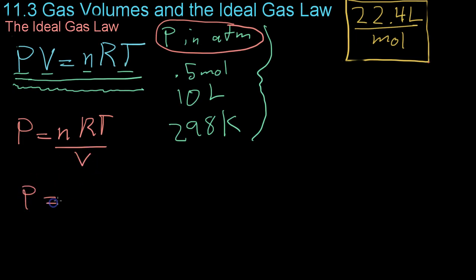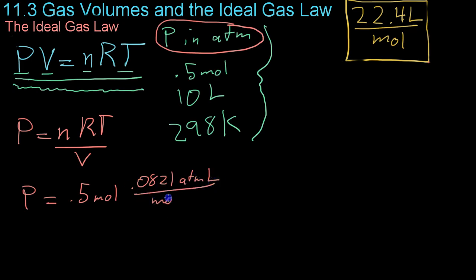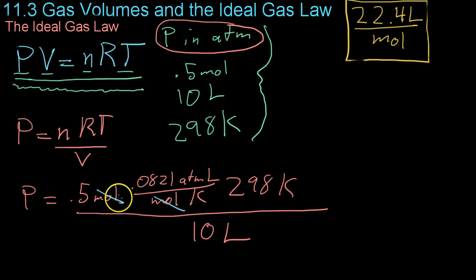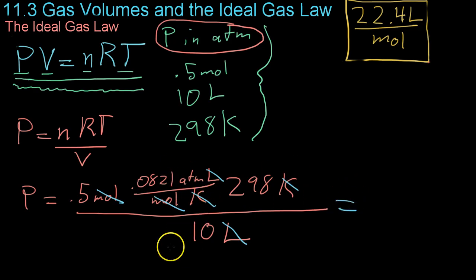Plug in the values: 0.5 moles times 0.0821 atmosphere·liters per mole·Kelvin times 298 Kelvin, divided by 10 liters. You can verify the setup by canceling units — moles cancel, Kelvins cancel, liters cancel — leaving only atmospheres. Doing the math gives you 1.22 atmospheres of pressure for this particular sample of nitrogen gas.